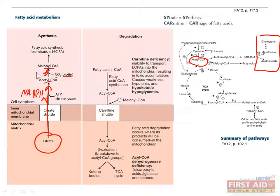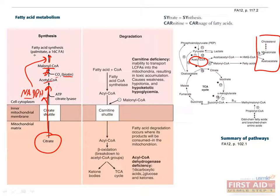This is the rate-limiting step of fatty acid synthesis, and therefore is the most heavily regulated. Next, fatty acid synthase is used to add 2-carbon units from malonyl coenzyme A to the growing fatty acid chain until it reaches its full length. This also requires NADPH, which conveniently was already produced from the citrate shuttle.